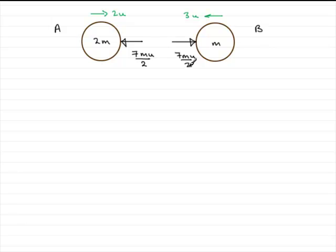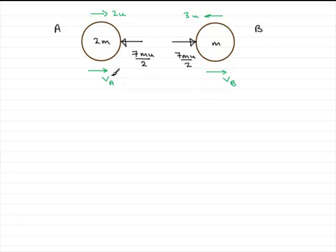We've got to find the speed of A immediately after the collision, so I need to mark on some velocities. I'm going to assume that A is going to carry on moving to the right after the collision, and the same with B. So I'm putting a velocity arrow VA for A and VB for B. Don't worry too much if you haven't got these arrows in the right direction — if you stick to the sign conventions and you've got it wrong, they'll only come out as negative, meaning it's going in the other direction. So let's take that direction as positive.